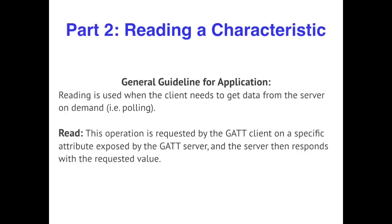In part two, we are going to read a characteristic value. Normally, this is done for polling, where you are trying to read a specific characteristic value on command. As an example, imagine you have a heart rate monitor and you only wanted to read your heart rate after every lap that you ran. To do that, you would manually go and read your heart rate.